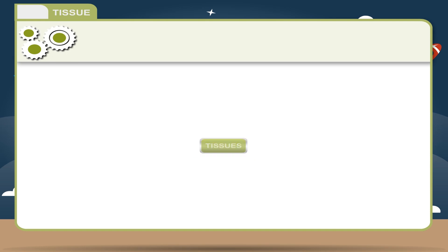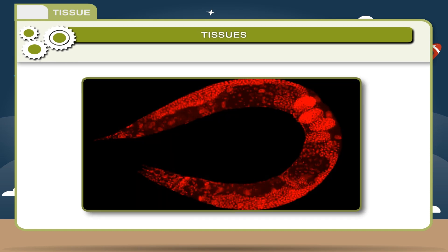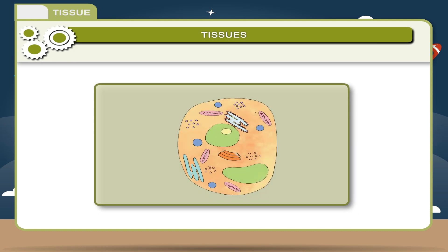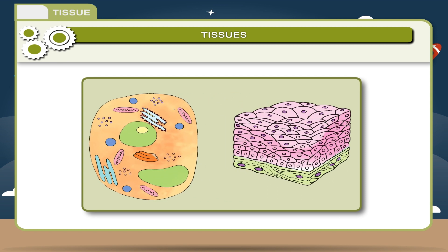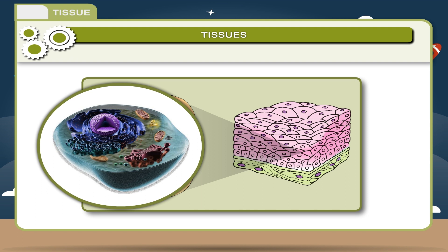Tissues. In multicellular organisms, cells exhibit division of labor in which similar cells join together to perform a particular function. A tissue is defined as a group of cells specialized to perform a particular function.